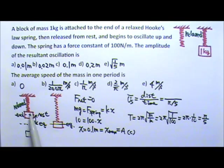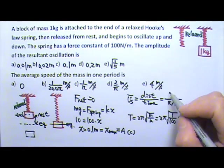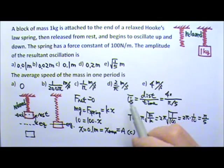4 times the amplitude is the distance traveled. 4 times the amplitude, 0.1 meters.